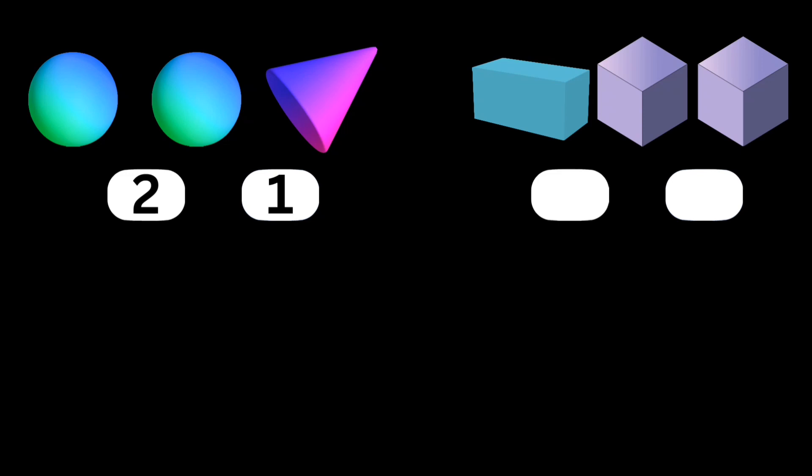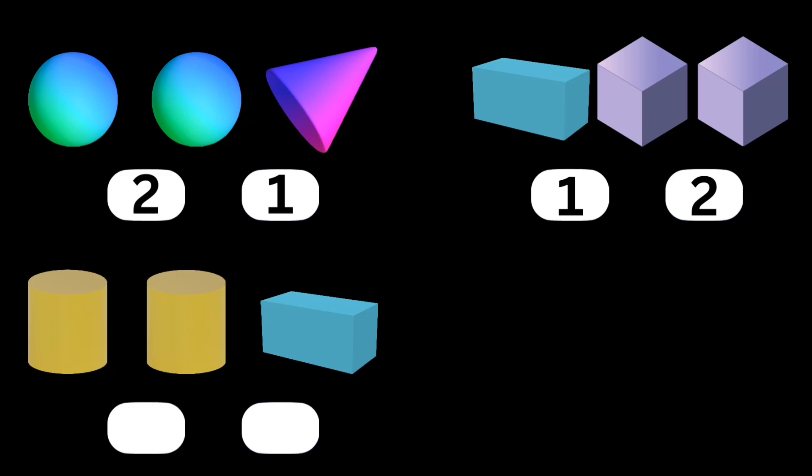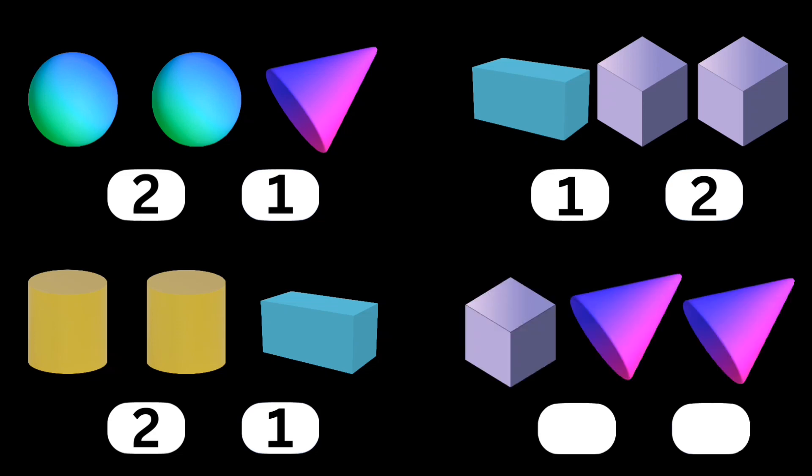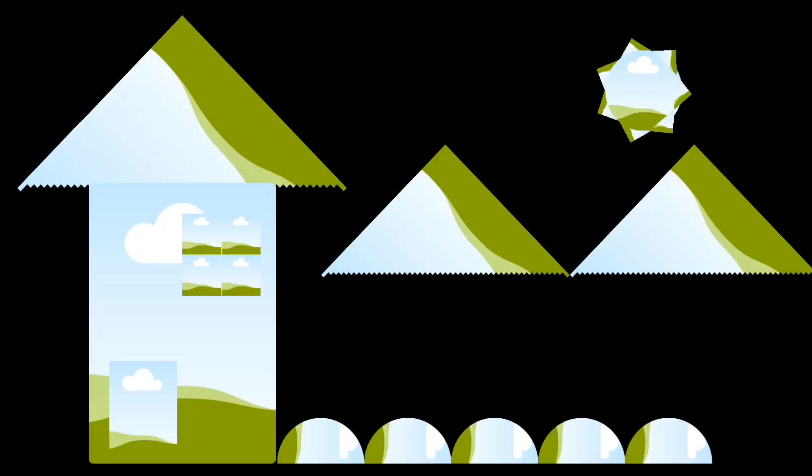Let's count this first set of 3D shapes. 2 Spheres and 1 Cone, 1 Cuboid and 2 Cubes, 2 Cylinders and 1 Cuboid, 1 Cube and 2 Cones. Great job kids!